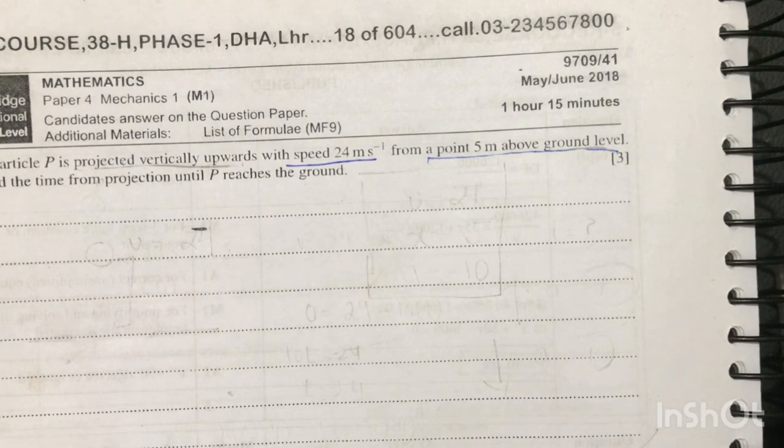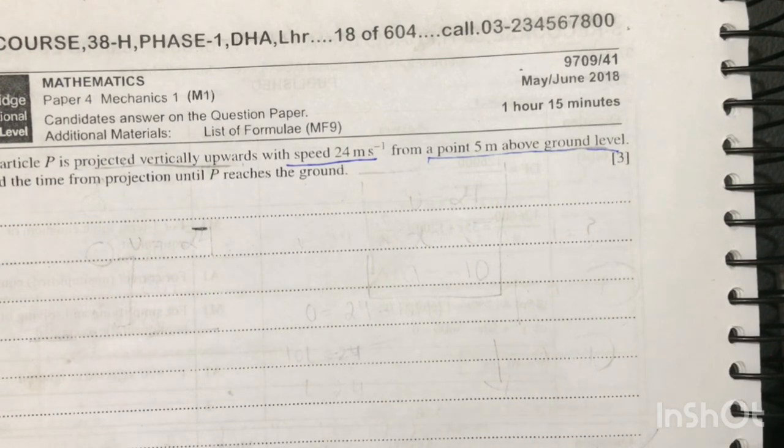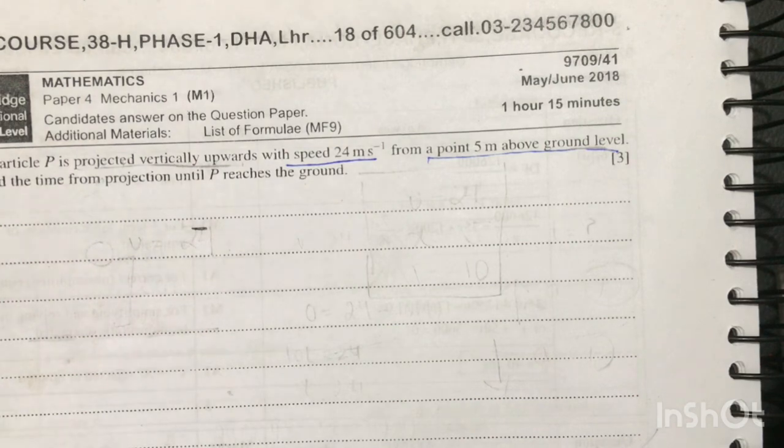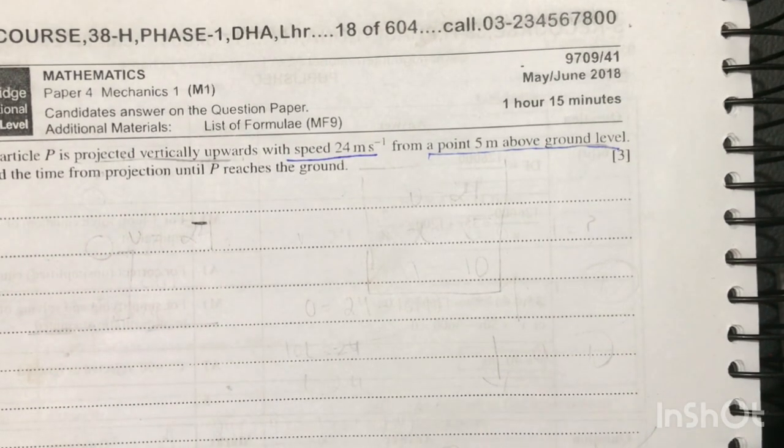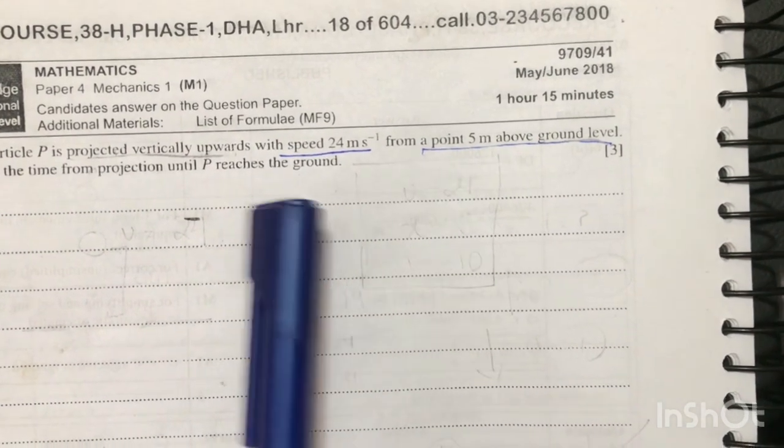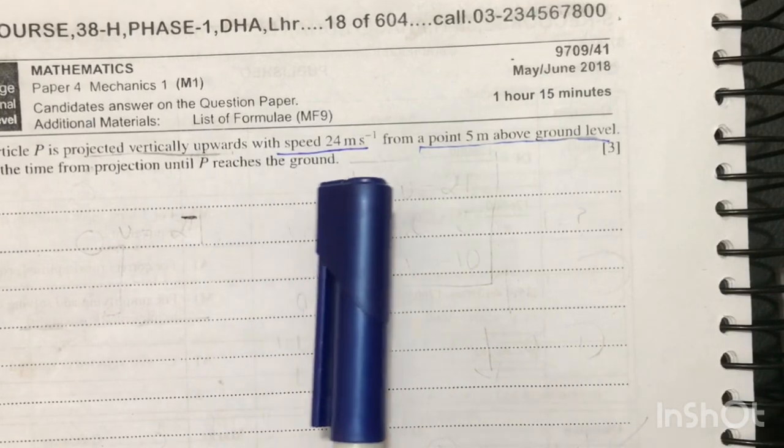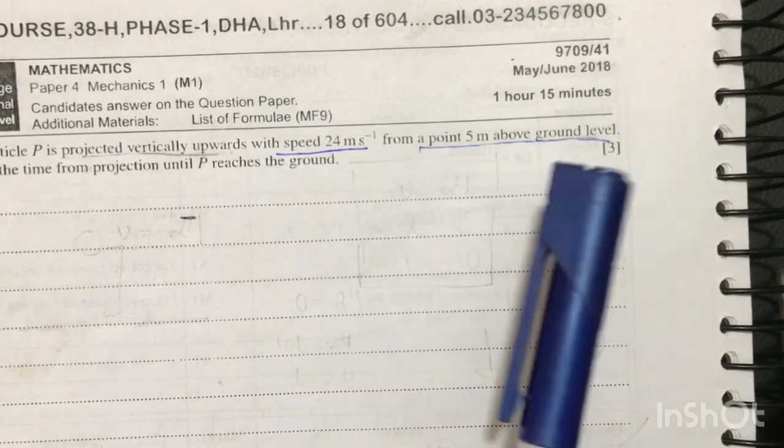So a key information to help solve your papers is to first make a diagram and also write down the information that they've given to you. Now let's read the question: a particle P is projected vertically upwards with speed 24 meters per second from 5 meters above ground level.